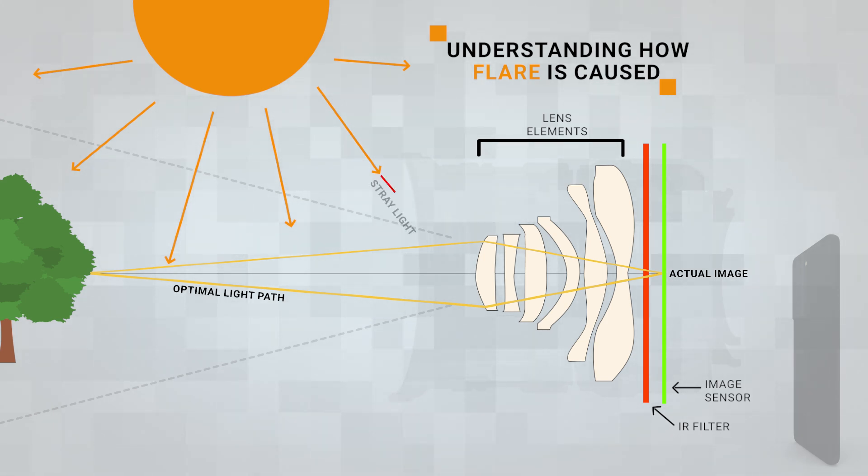However, this stray light beam path in red here reflects internally on lens elements before reaching the sensor, leading to unwanted flare artifacts.